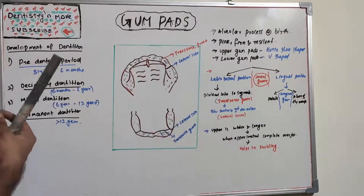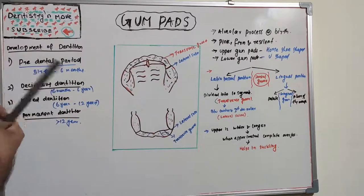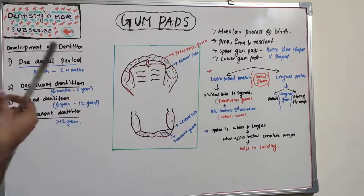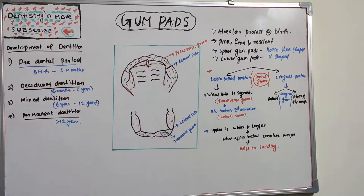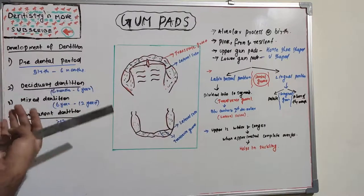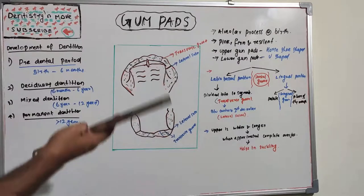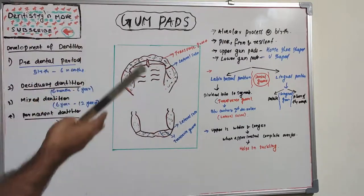We clean the gum pads from the first week of birth using a small piece of gauze — a two-by-two gauze — held between the thumb and forefinger, and wipe vigorously over the gum pads. Nowadays, infant toothbrushes, finger cots, and wipes are available.